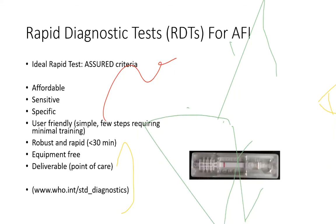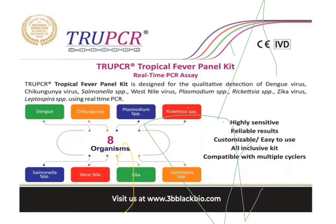For any rapid diagnostic test for AFI, the ASSURED criteria should be followed: affordable, sensitive, specific, user-friendly, robust, rapid, equipment-free, and a point-of-care test. A tropical fever panel kit is available in India where 8 tropical illnesses — dengue, chikungunya, plasmodium, rickettsia, salmonella, West Nile/vecinal, Zika, and leptospira — can be detected in a single platform.